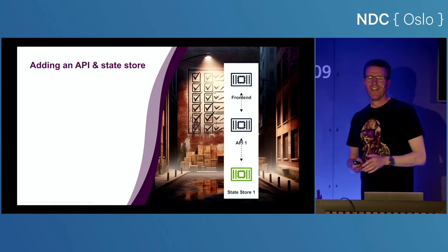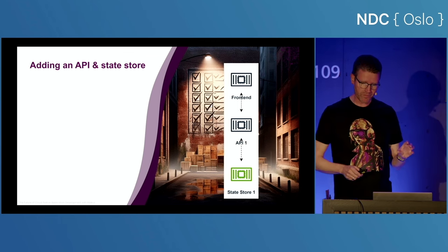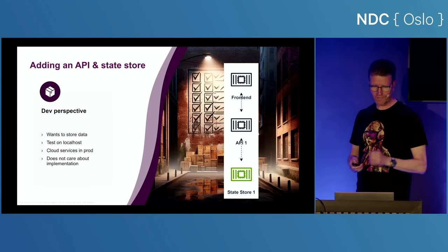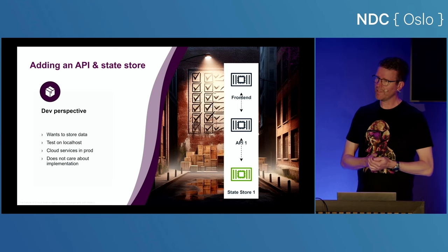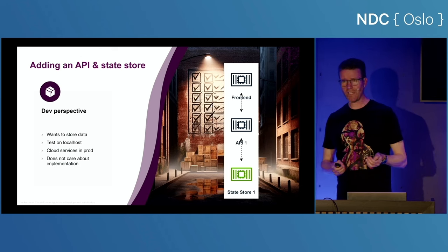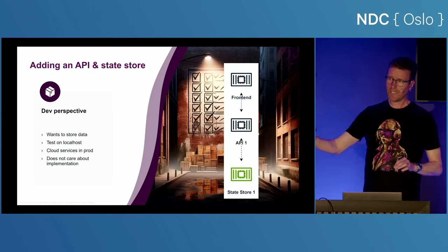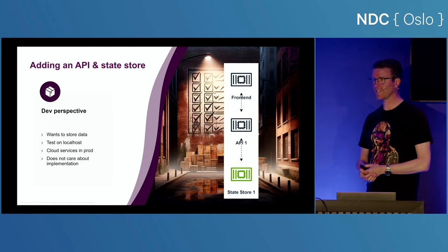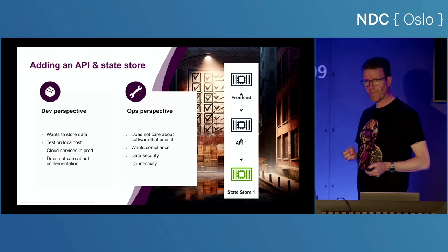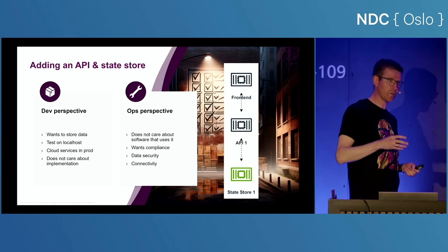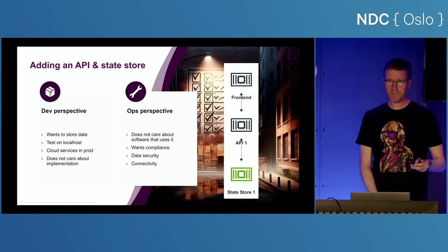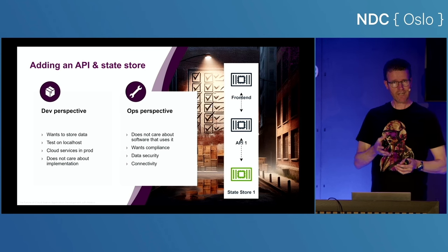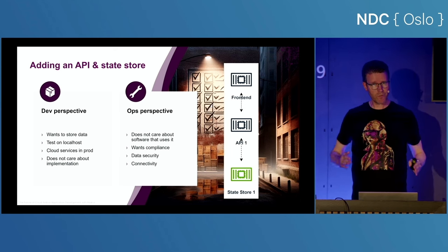For this next stage, I will be running a frontend talking to an API with a state store to back up the data. Radius can definitely help here. From a developer perspective, you just say you want to store some data — if running on your laptop you want it local, if running in the cloud you need a cloud service. What the actual service is, you don't really care about. From an operational perspective, you don't care about what software runs your state stores, but you want that state store to be highly compliant, secured, protected, with private networking. So you really care about the protection of that data.